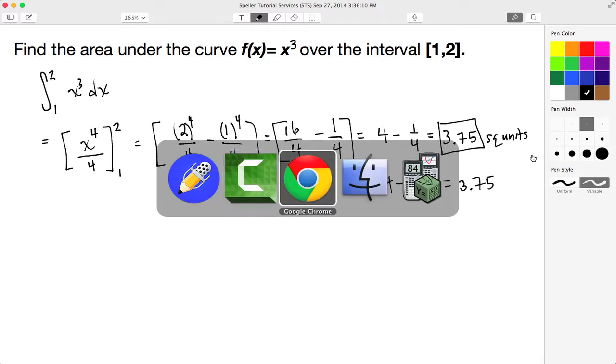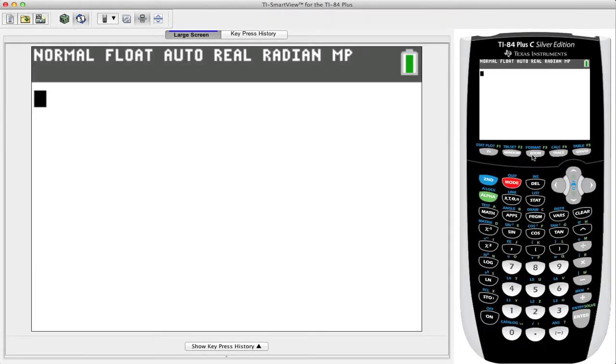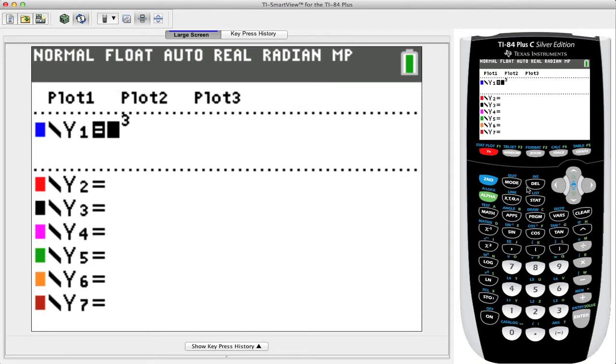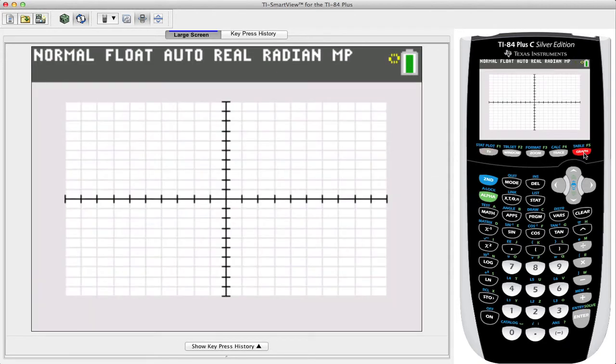I'll begin by pressing the y= button, and you see I already have the x³ function in place. Let's go ahead and click graph.